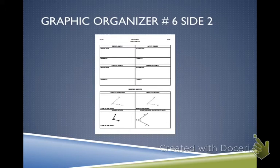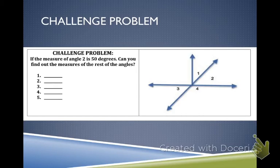This is not side number two. You will need the back side to this piece of paper, and we will be working at the top and the challenge problem at the bottom. On your graphic organizer, you will see this challenge problem. Our goal is to solve this problem today without any issues. It says, if the measure of angle 2 is 50 degrees, can you find out the measure of the rest of the angles? That is what we will be doing today.